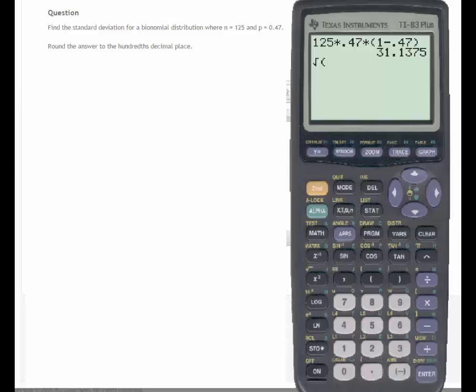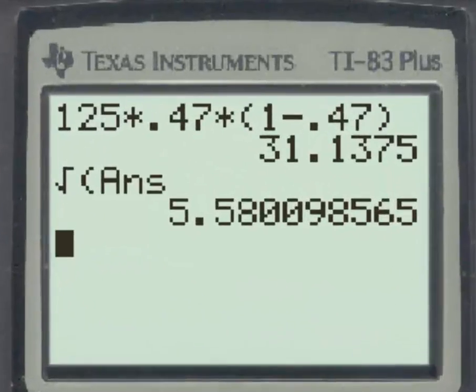although a nice shortcut is to use the last answer input, which is over the negative sign. So clicking the second yellow key and answer, we have the square root of the variance, or the standard deviation, which to the hundredths place is 5.58.